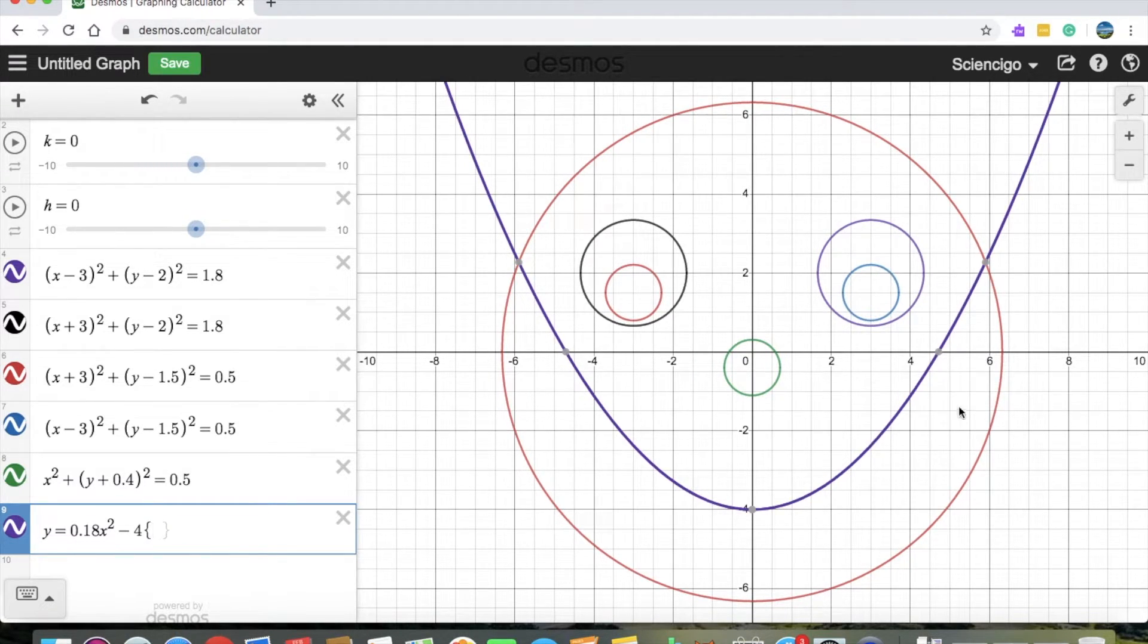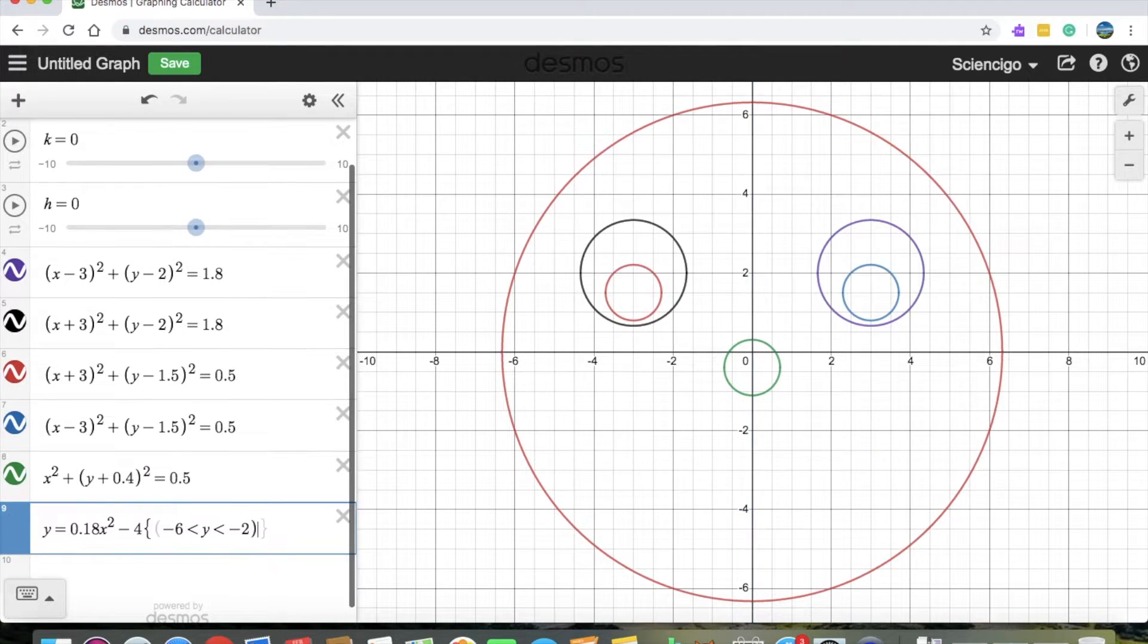So we need y to be greater than negative 6. But we also need y to be less than negative 2. Look at that. We've got a smiley face. Looks happy.